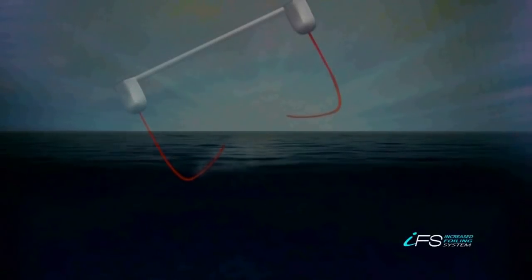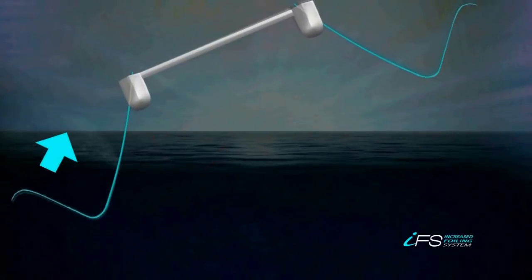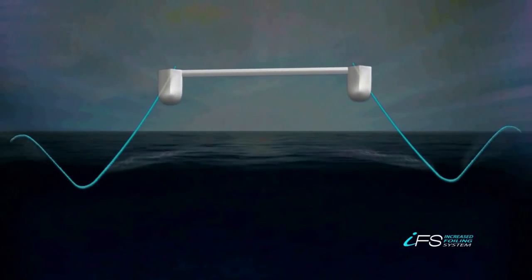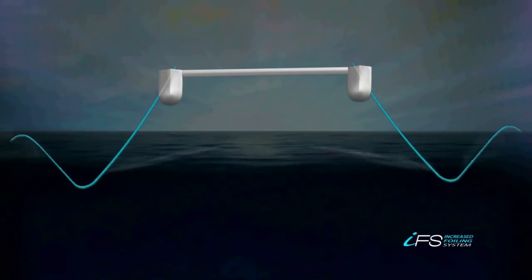In dinghies and yachts, the IFS dynamic beam increase system increases the righting moment, favoring a more stable, comfortable and safe flight navigation, also making it possible to increase the sail area or an increase in speed performance of ships.